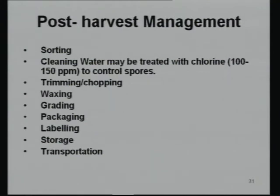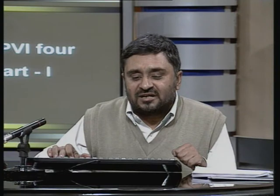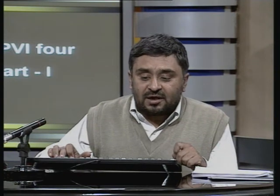Retail marketing is growing with multinationals and Indian companies entering the sector. A fruit grower who can identify how to sort, properly pack, and transport produce can add a lot of value. For example, sorting cauliflower at the farm level reduces transportation costs and eliminates unwanted material. Waxing is important as it reduces the rate of respiration that leads to faster maturity and spoilage.